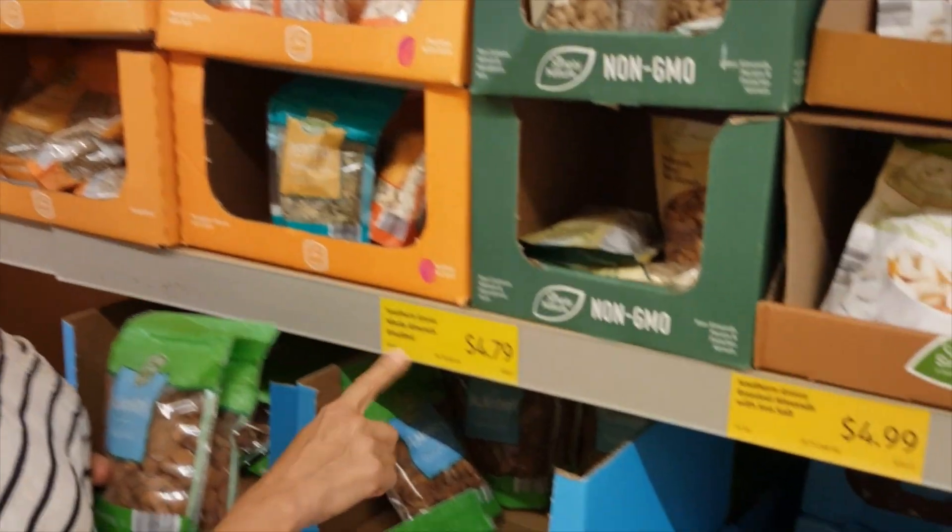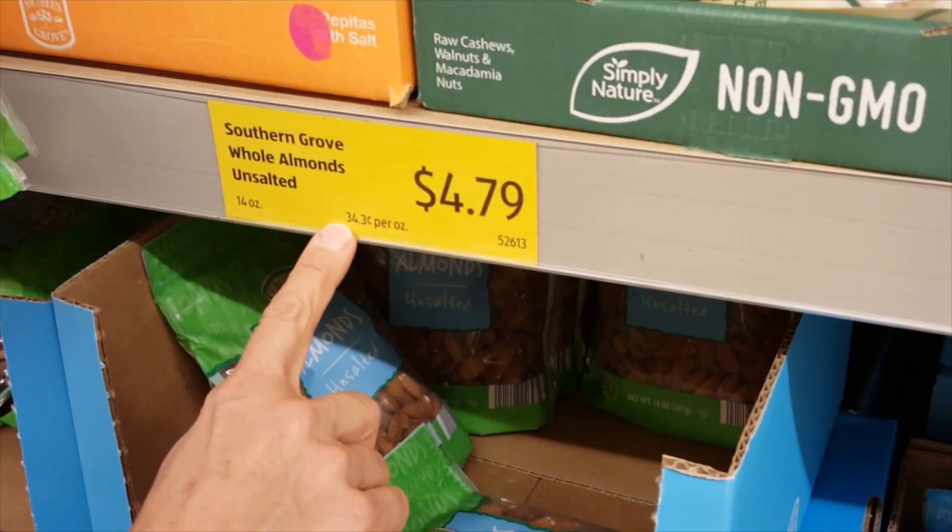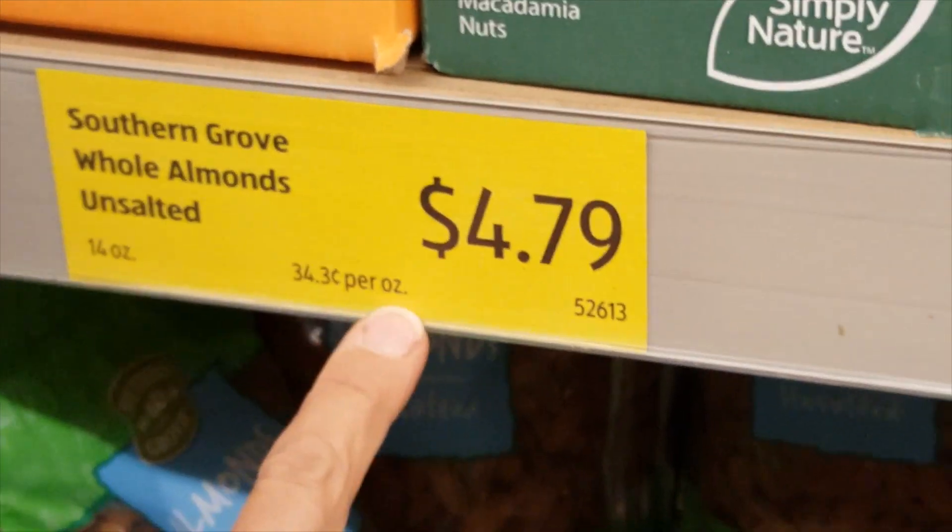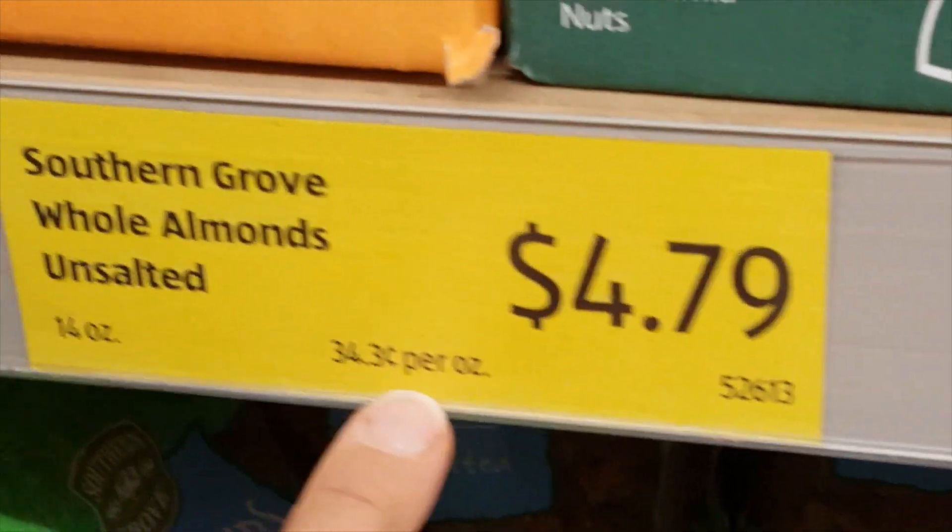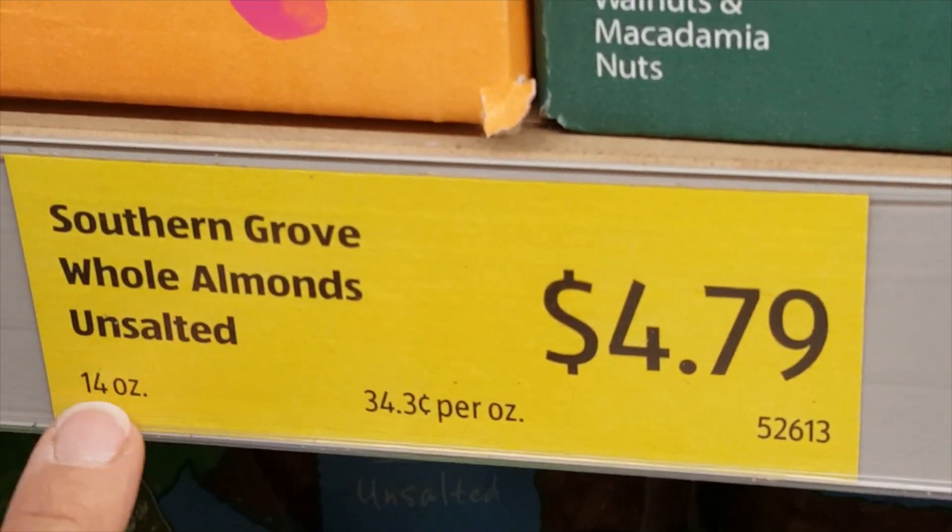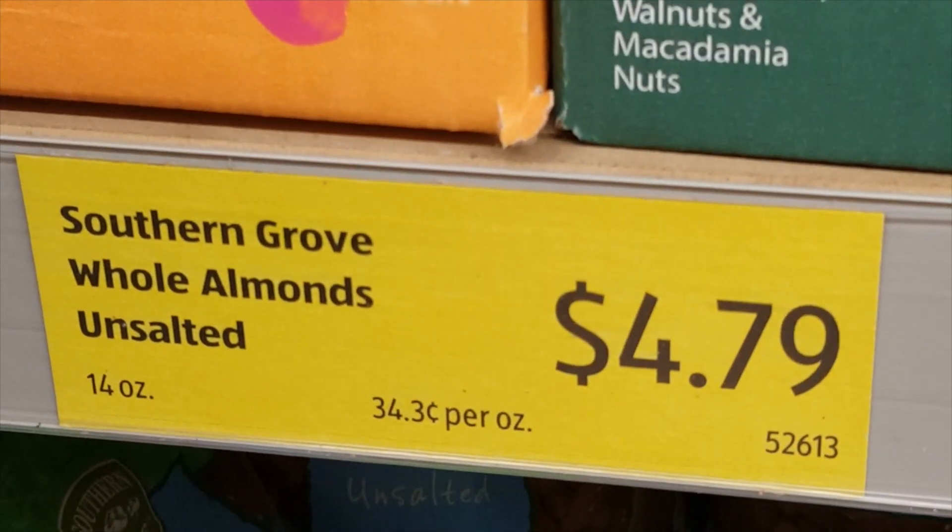Take a look - the almonds, 14 ounces, and they're 34.3¢ per ounce. So this is your unit price and this tells you how much per ounce. We'll show you how to multiply these together to get your final price.